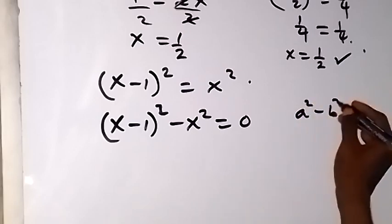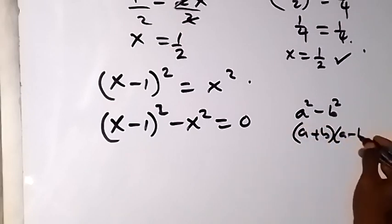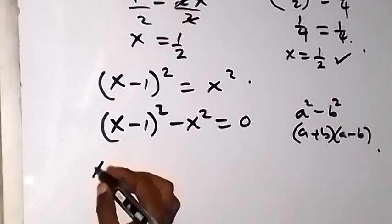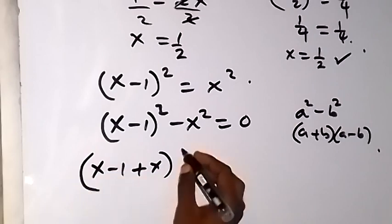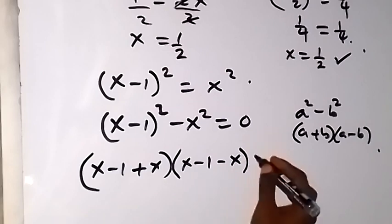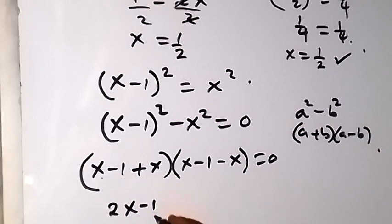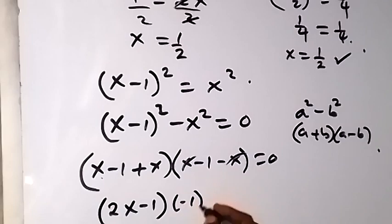When we have a squared minus b squared, this gives us a plus b, multiplied by a minus b. That's the difference of two squares. When we apply it, we have x minus 1 standing as a, then plus x standing as b, times x minus 1 minus x, equals to zero. In the first bracket, we have x plus x minus 1. In the second bracket, we have x minus x equals to zero.